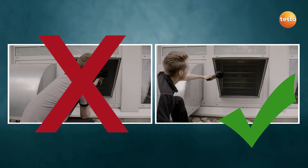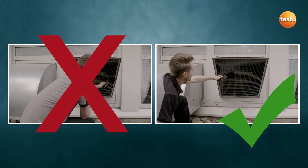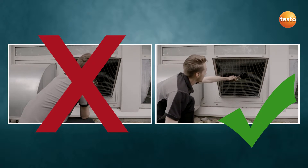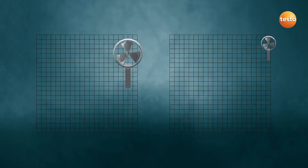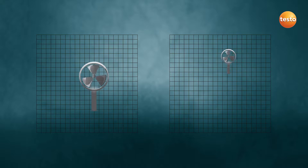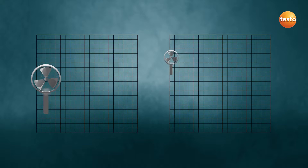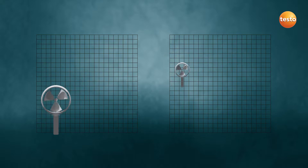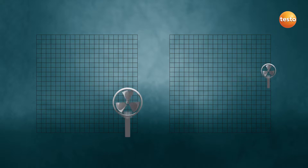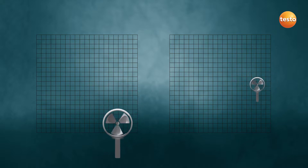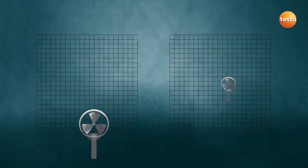The best method is to move the vane across the grill surface at a distance of 5 cm. Vanes with 100 mm diameter are better suited to measuring than instruments with smaller vanes, as the flow values are integrated and averaged over a larger area. Integrating the same area with a smaller vane takes significantly longer.